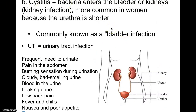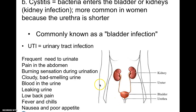Cystitis is not something you do to yourself — you just get a bacteria. The bacteria travel to your bladder or kidneys. This is more common in women; this is a UTI — urinary tract infection — because in females, the urethra is much shorter, so bacteria don't have far to travel, creating a UTI.